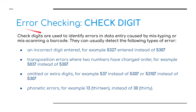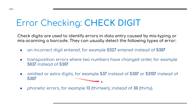Now I want to talk about the final method for error checking, and that is check digits. It's different from the others in terms of it's used with barcodes, and it's used for the mistyping or miss-scanning of a barcode. It can usually detect the following types of errors: an incorrect digit has been entered, for example 5327 rather than 5307. It's also used to identify transposition errors, where two numbers have changed order, for example 5037 instead of 5307. It might detect omitted or extra digits. It can also detect phonetic errors, for example 13 has been entered rather than 30 — the number was misheard.